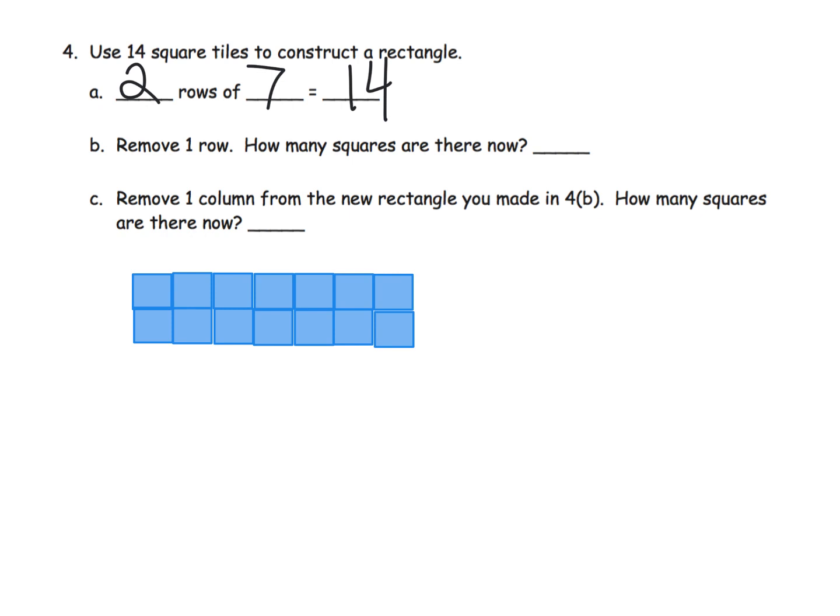Now, step B says to remove one row. So I'm going to remove one of these rows. So let's see. Boom. Here's the row I'm going to remove. Boom. It's gone. So now the question is, how many rows are there now? Well, the way I drew it, there are now one, two, three, four, five, six, seven. There's now seven squares now.